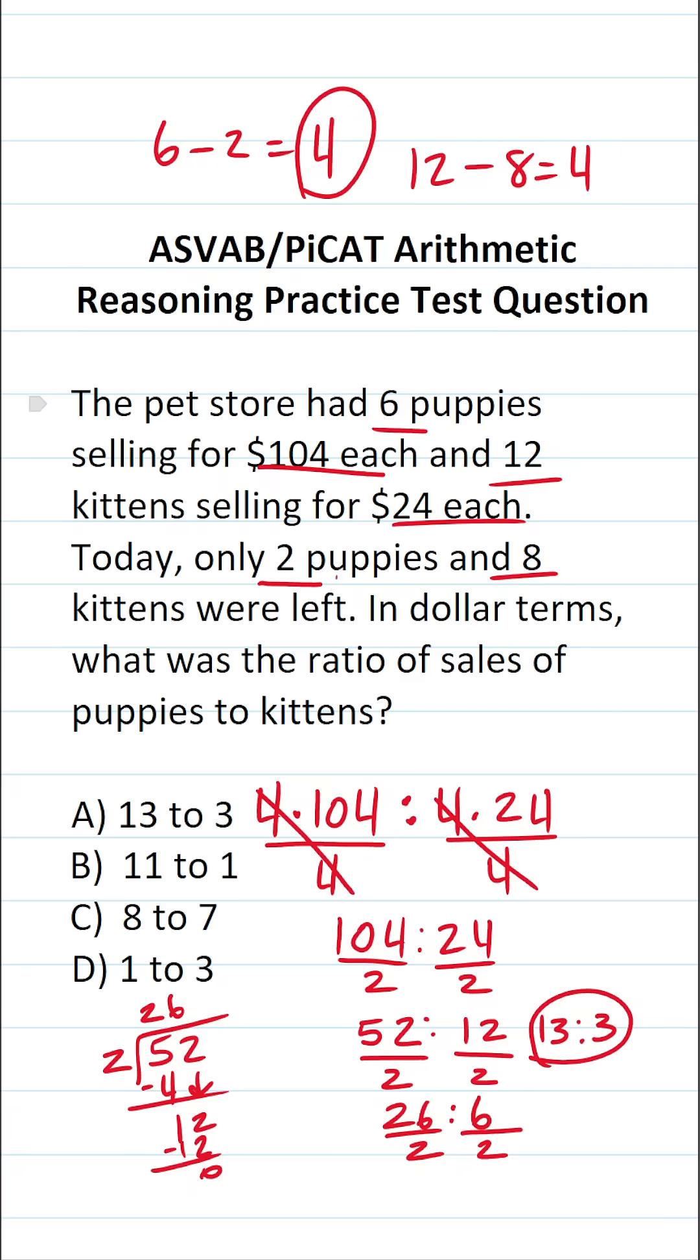So we can't reduce this any further. So in dollar terms, the ratio of sales of puppies to kittens is going to be 13 to 3.